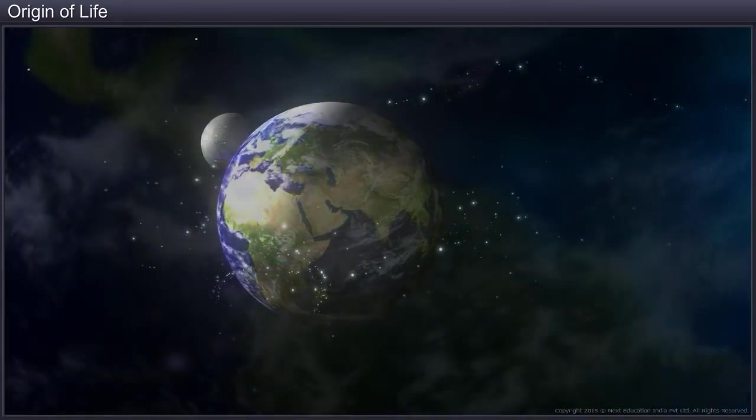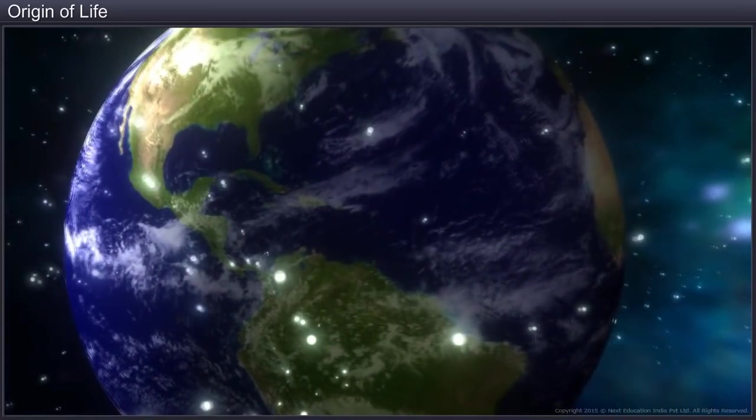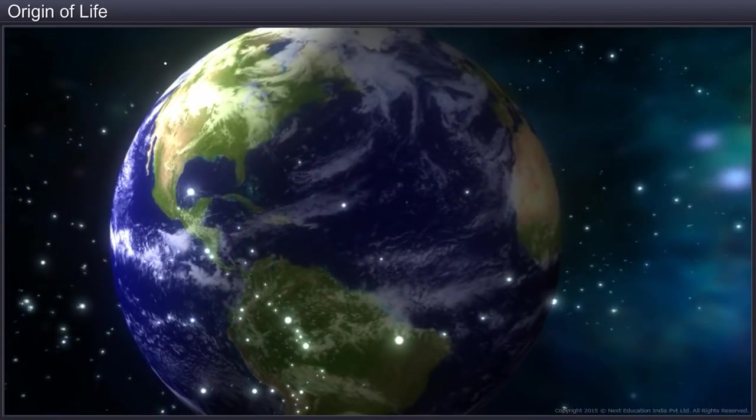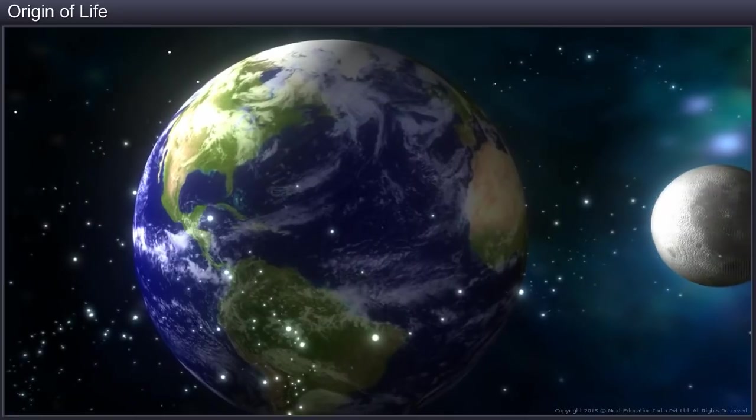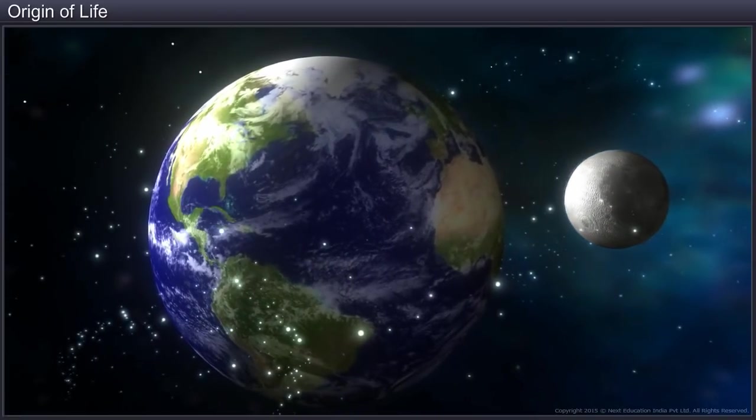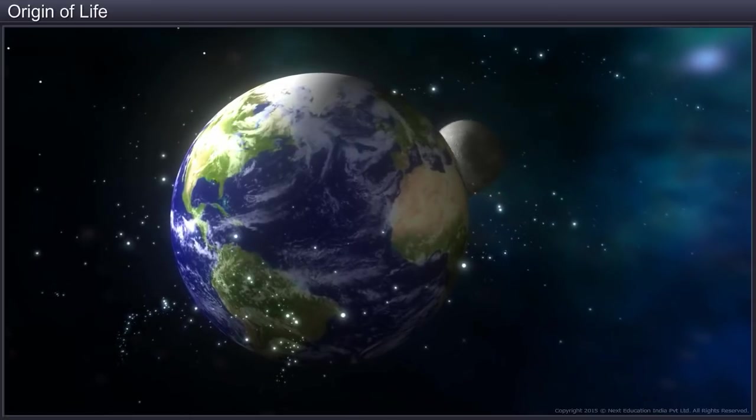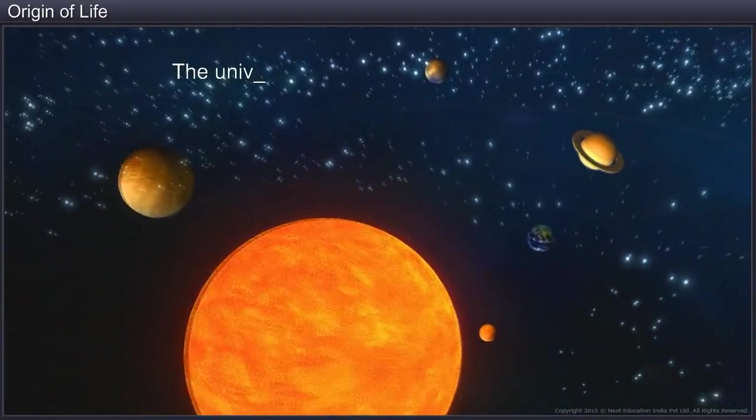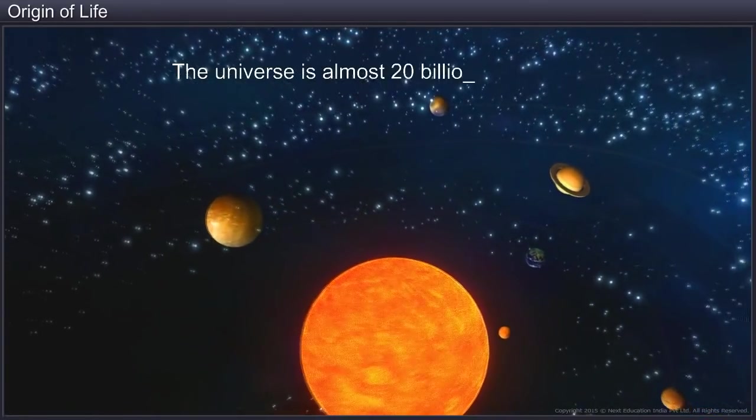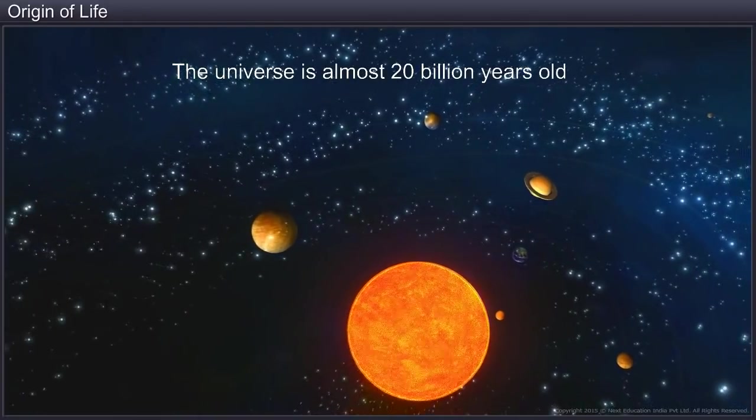The origin of life forms or biodiversity is interlinked with the evolution of the earth, which is again closely associated with the evolution of the universe. The universe is vast, comprises many galaxies, and is almost 20 billion years old.